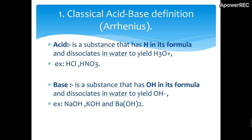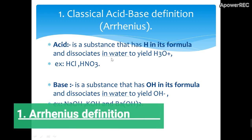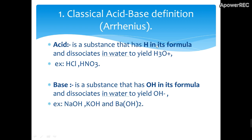To define what is an acid and what is a base, we have to go through three types of definitions. First of all, Arrhenius. Arrhenius said that an acid contains a proton in its formula, and this is specific to water — it is a proton donator in aqueous solution. The base is a substance that has OH in its formula, as a hydroxide donator, specifically in water, to yield hydroxide ions.